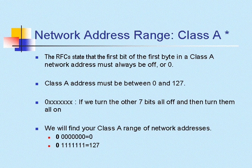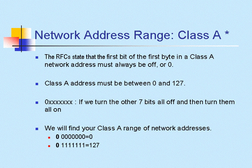For a Class A network, the RFC states that the first bit of the first byte must always be turned off. So that first byte equals 128. Therefore, if I was to add up the other bits in the octet or the byte, that would leave me a total of 127 for the maximum. That's how we come up with the range for a Class A being from 0 to 127. We don't use the 127 — that's reserved for diagnostics, and we're going to talk more about that in just a moment.